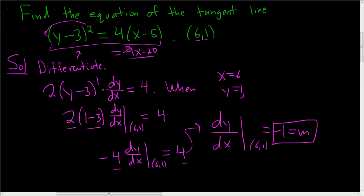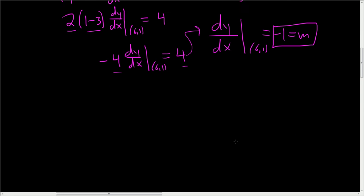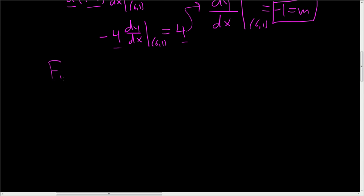So to finish, we use the point slope formula. So the formula is y minus y1 equals m times x minus x1.